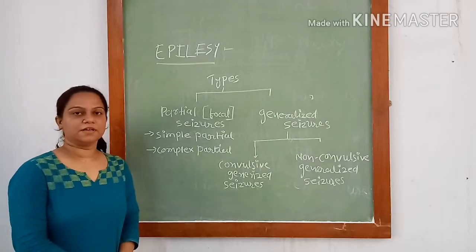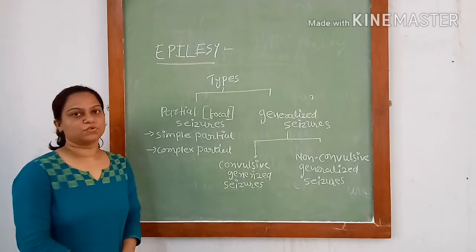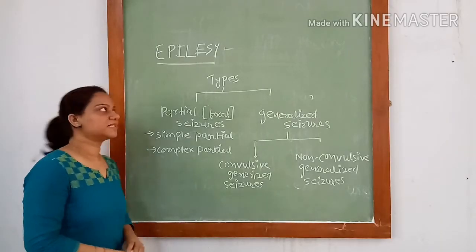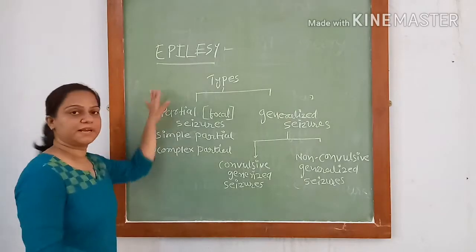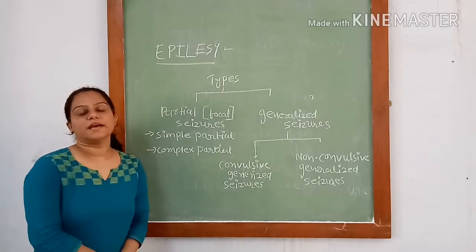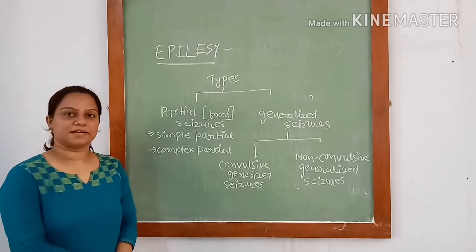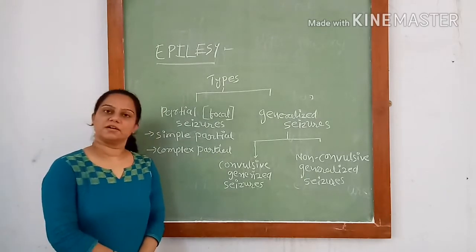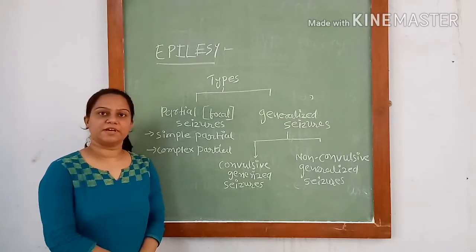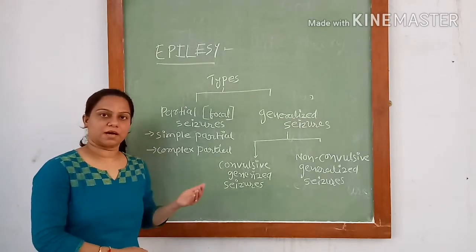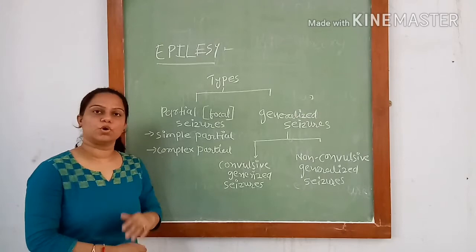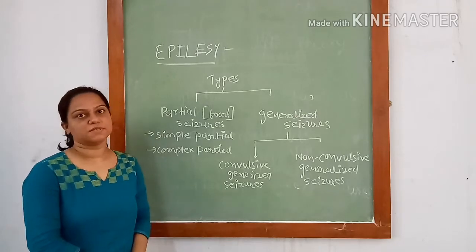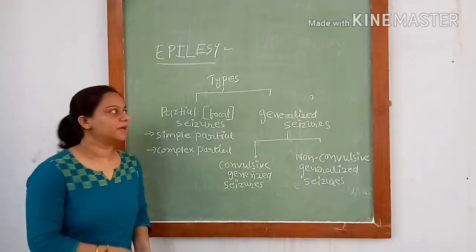Hello everyone, let us go through the physiological basis of epilepsy. Epilepsy is characterized by uncontrolled activity of either part or all of the central nervous system.